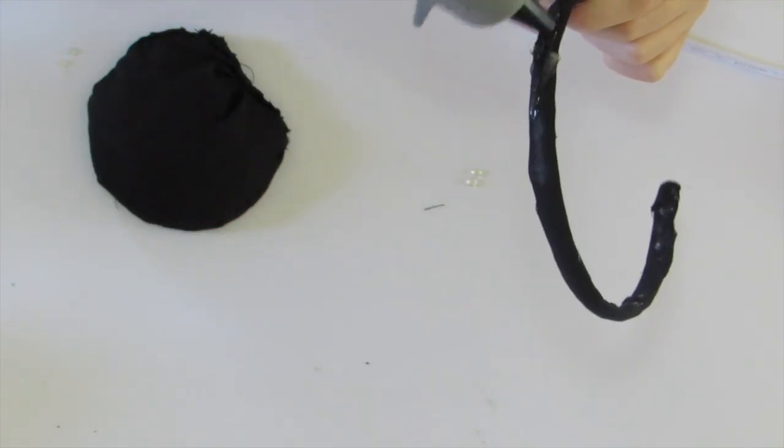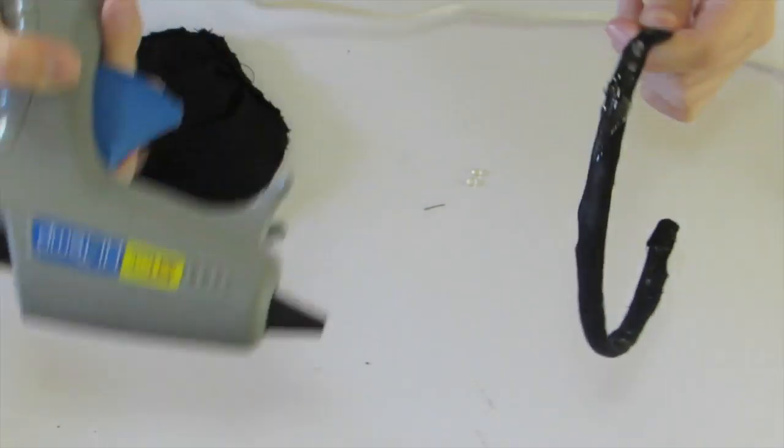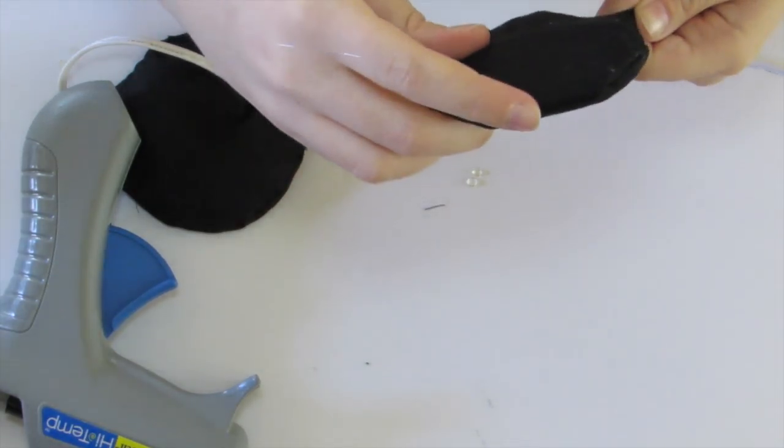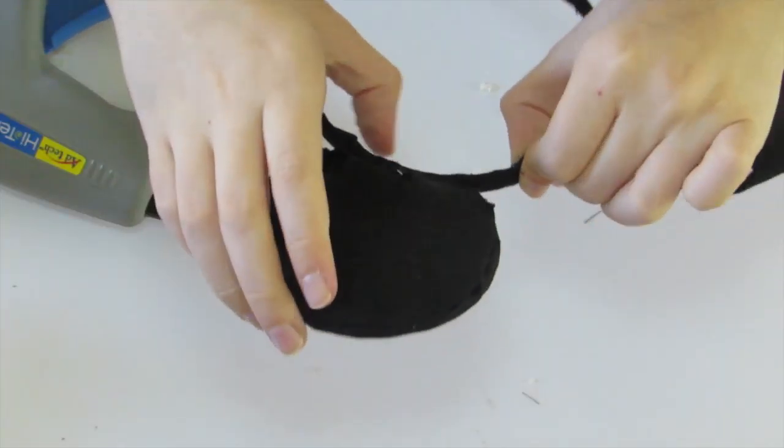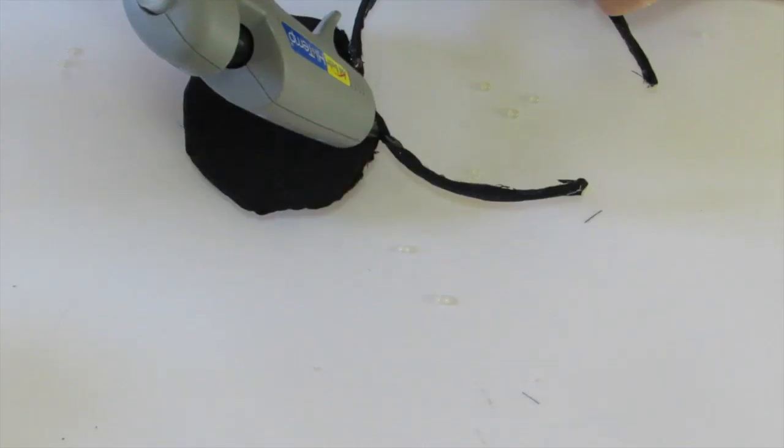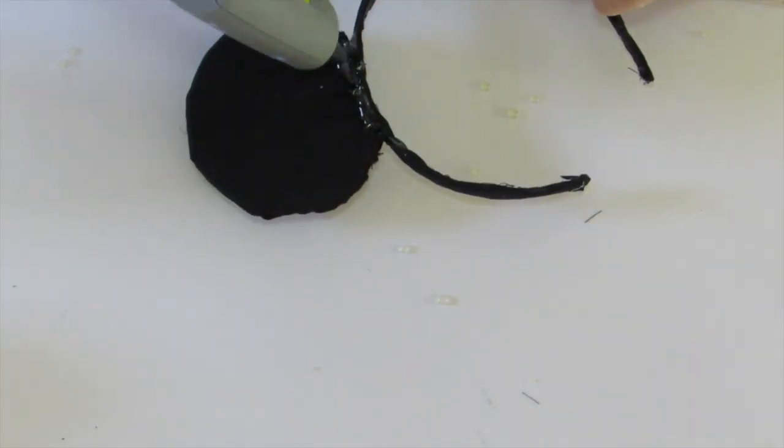Next secure your ears on using hot glue and press down very hard to make sure that they don't come off. You can reinforce the back by using more hot glue if you wish.